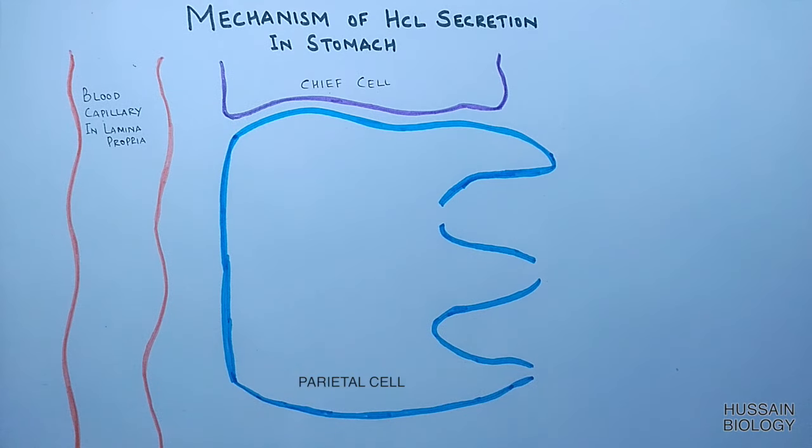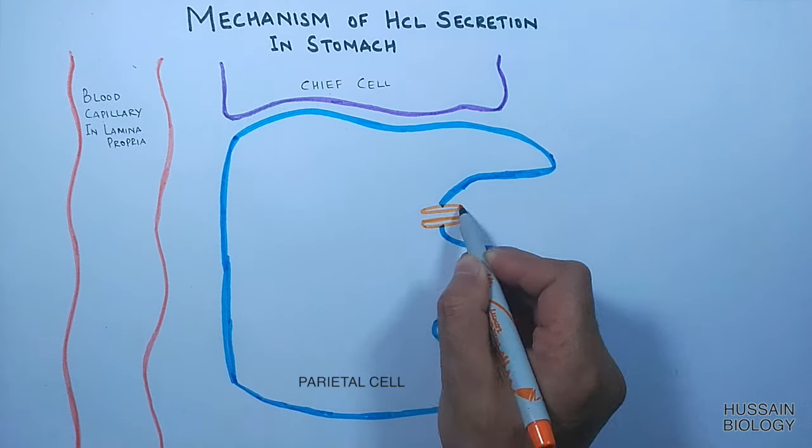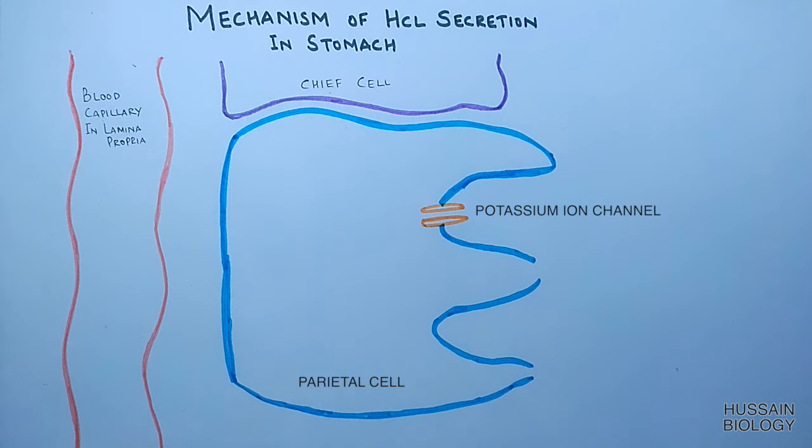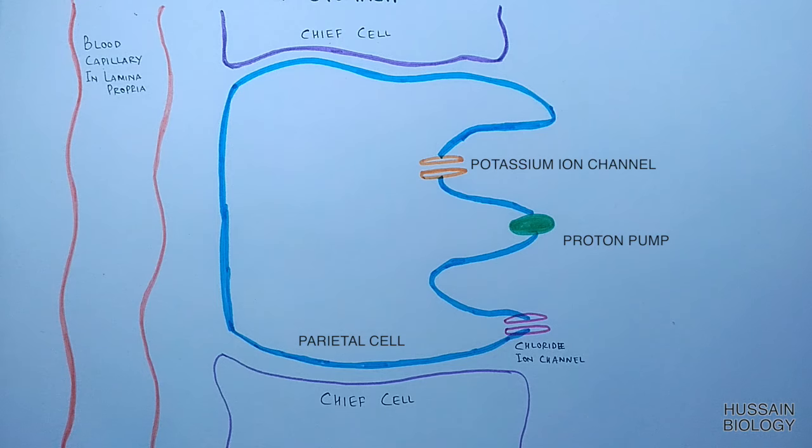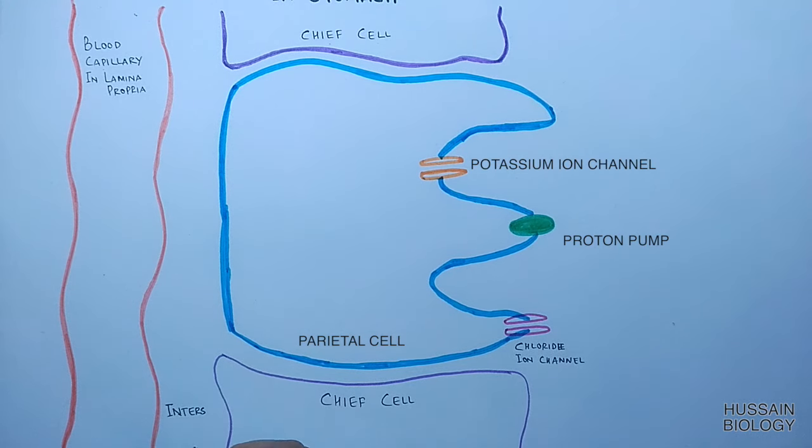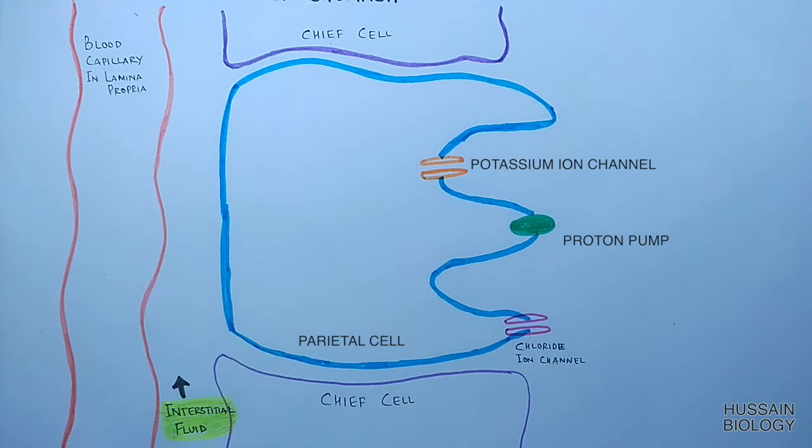The parietal cell on its apical side has a potassium ion channel as shown in the diagram. It also has a proton pump and a chloride ion channel. The space between the blood capillary and cells is the interstitial fluid, and on the apical side of the parietal cell we have the stomach lumen.